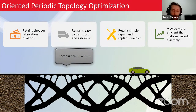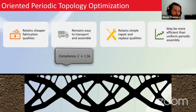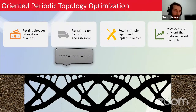Through an oriented arrangement of unit cells with the same periodic constraint, we get an optimized design with compliance of 1.36 — reduced from 1.5. We've maintained the structural and manufacturing benefits of periodic optimization, while reducing structural compliance through specific oriented arrangements.